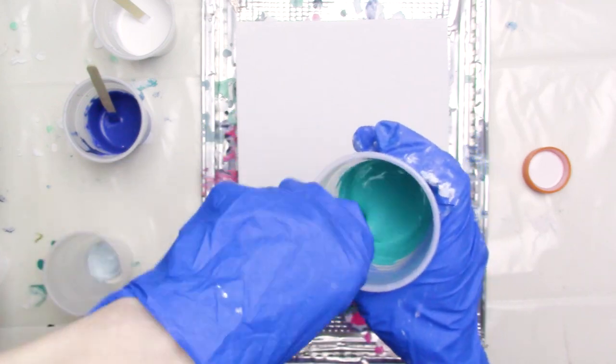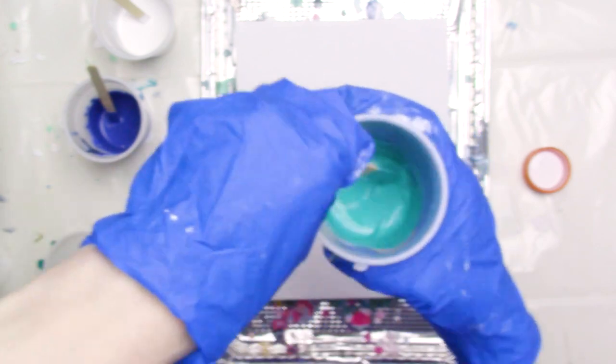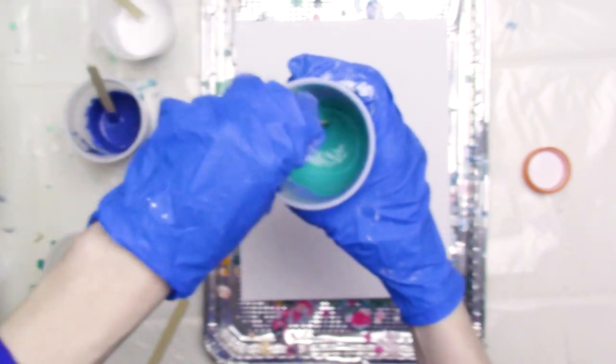If your paint is on the thicker side, you may have to add a little bit more Floetrol or even a little bit of water to get the consistency that you need for a good pour.